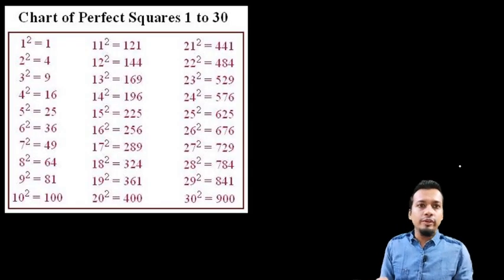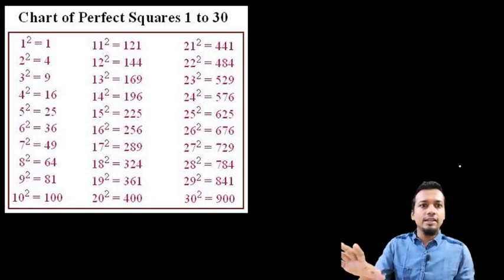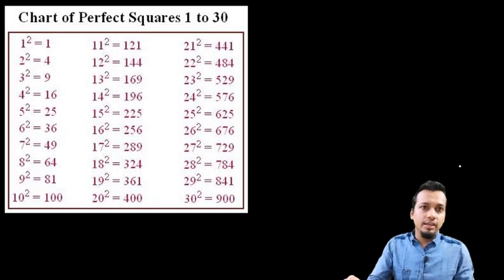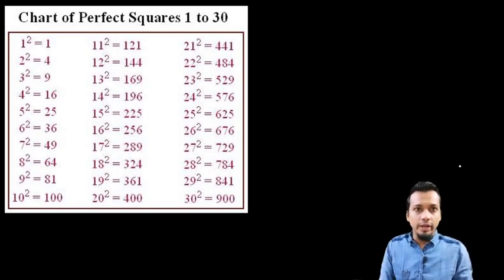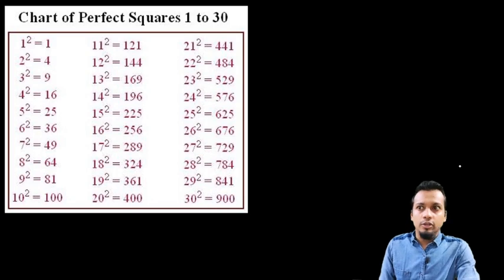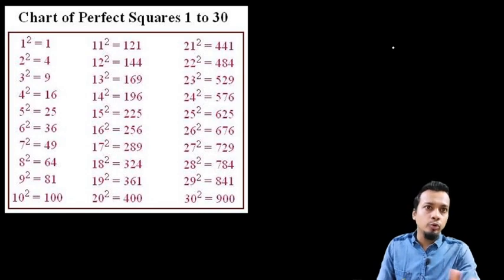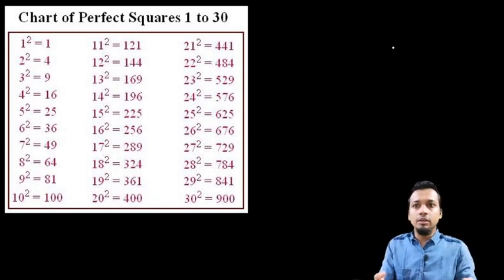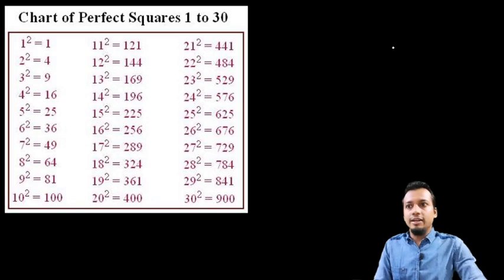Before moving ahead, you can see on the screen that I've given a chart listing the squares from 1 to 30. This is the prerequisite — the thing you should know beforehand before applying these tricks. I hope you all know these things; if not, please memorize them carefully. This is going to be the panacea for solving squares. Let's start with our process.